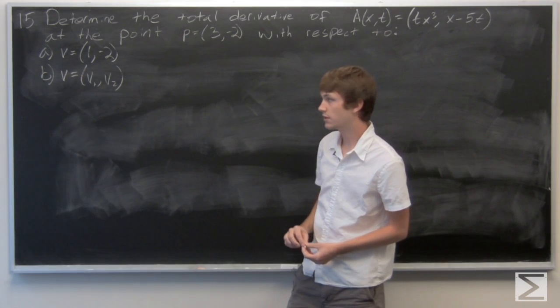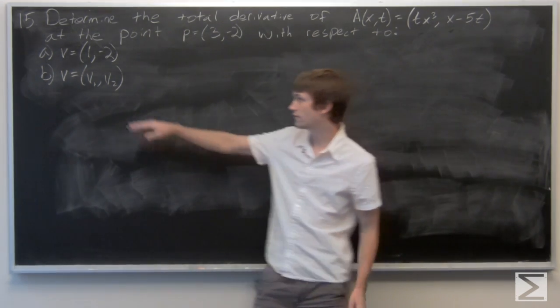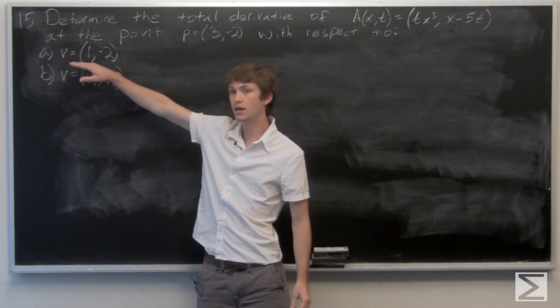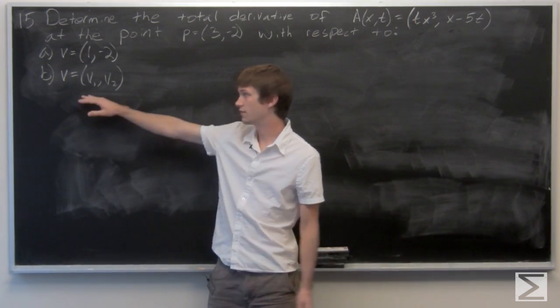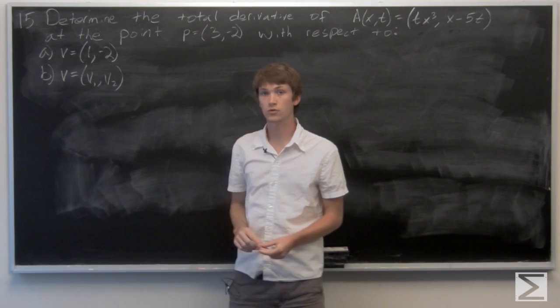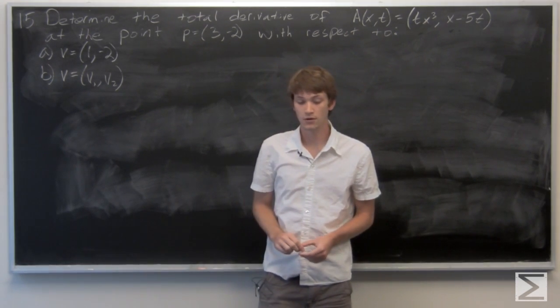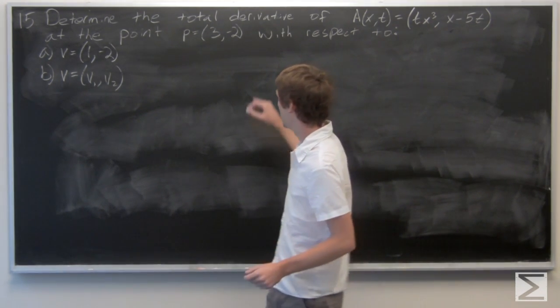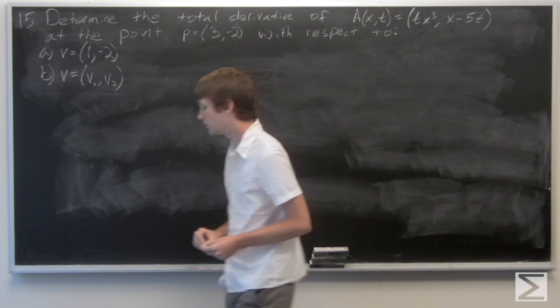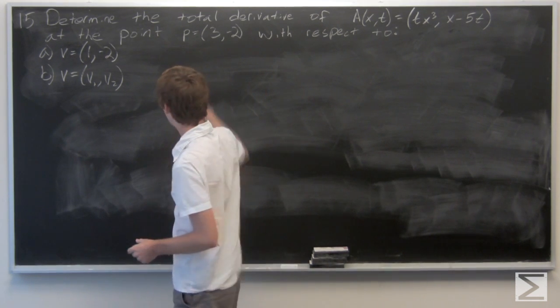For part a, we want the total derivative with respect to the vector (1, negative 2). For part b, we want it with respect to an arbitrary vector. So to find the total derivative: